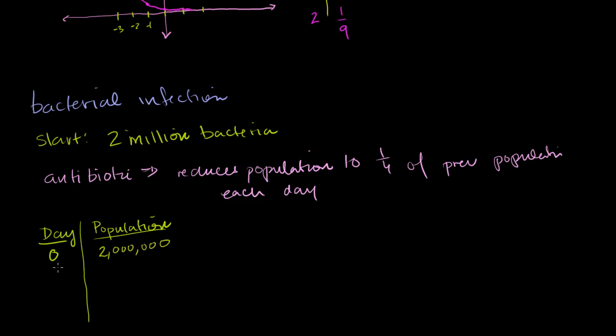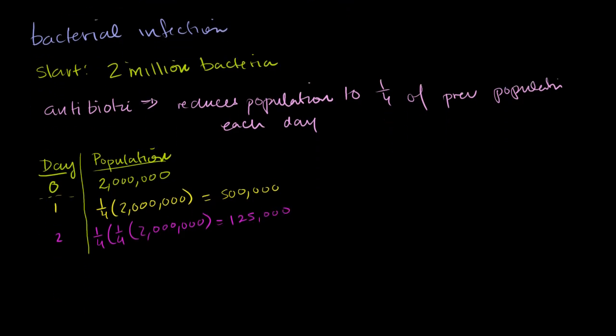Now on day 1, you've taken the antibiotic. So it reduces it to one-fourth of your previous population. So now your population is going to be one-fourth times 2 million, which equals 500,000. Then on day 2, it's going to be one-fourth of this, one-fourth of 500,000, which is 125,000. I think you're starting to see the pattern that's emerging.